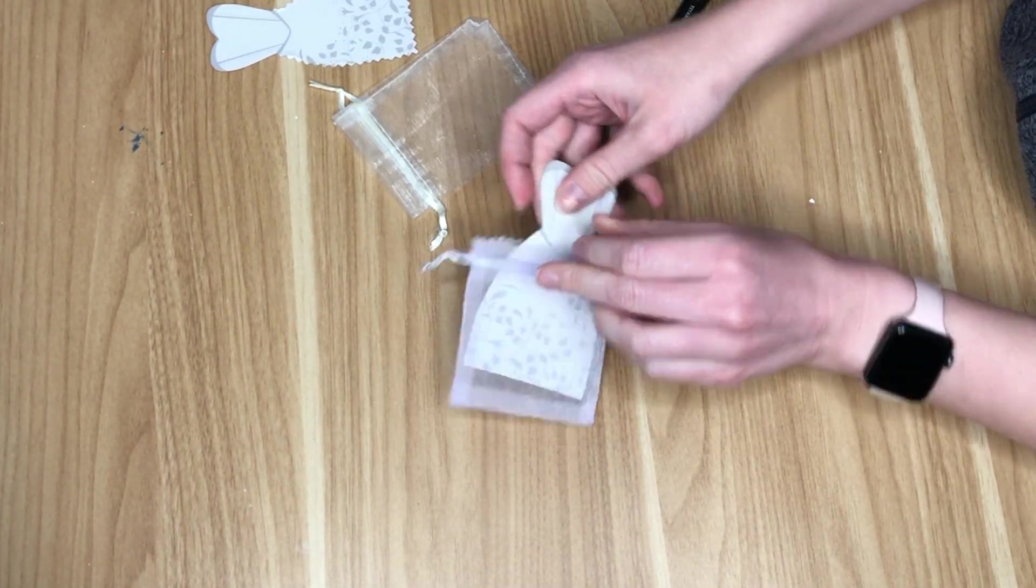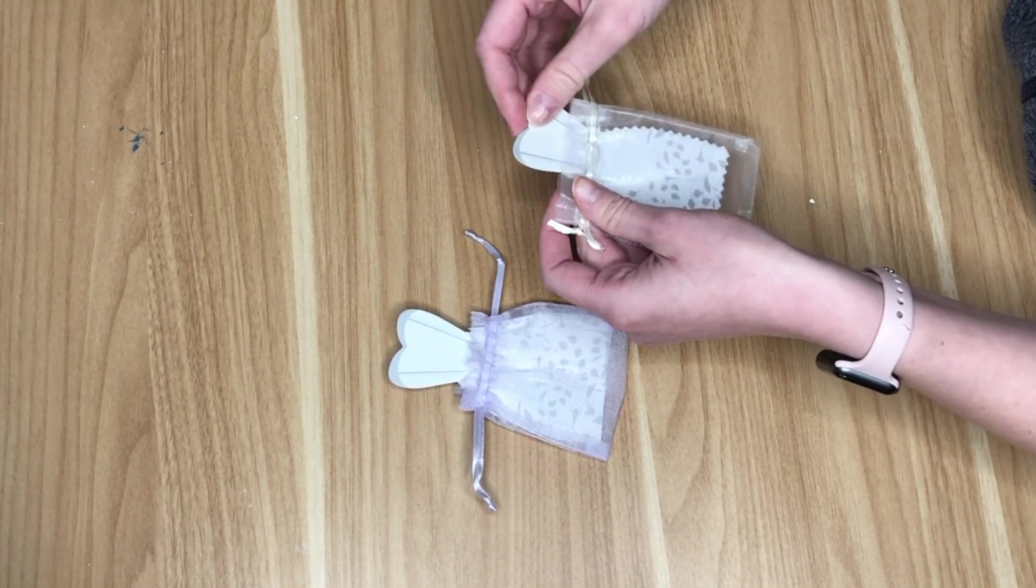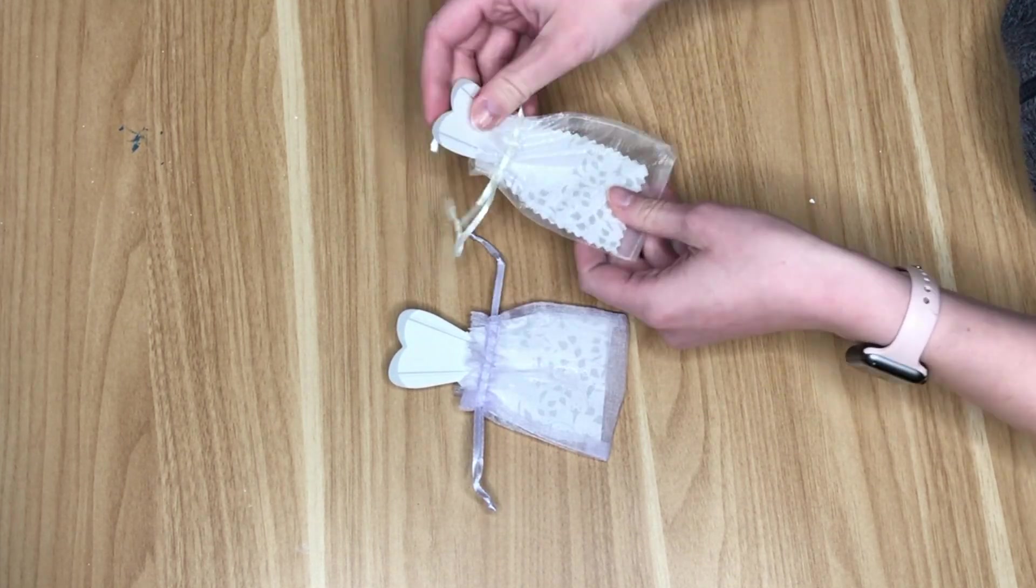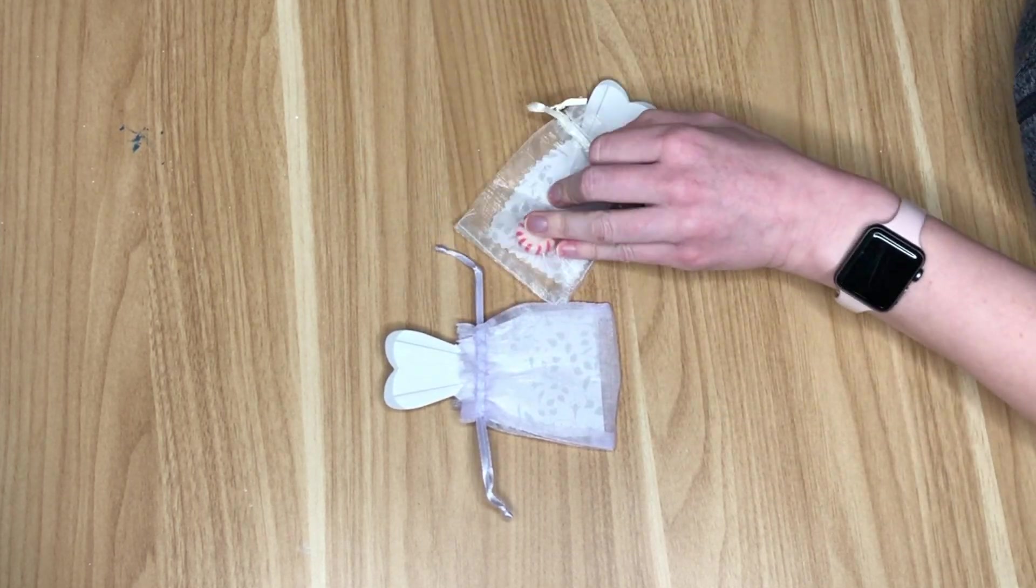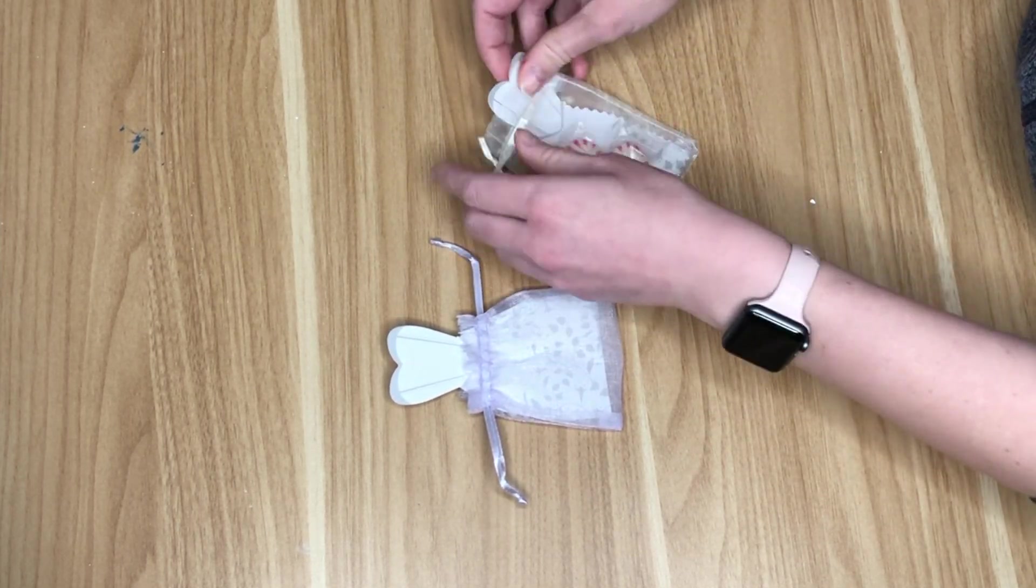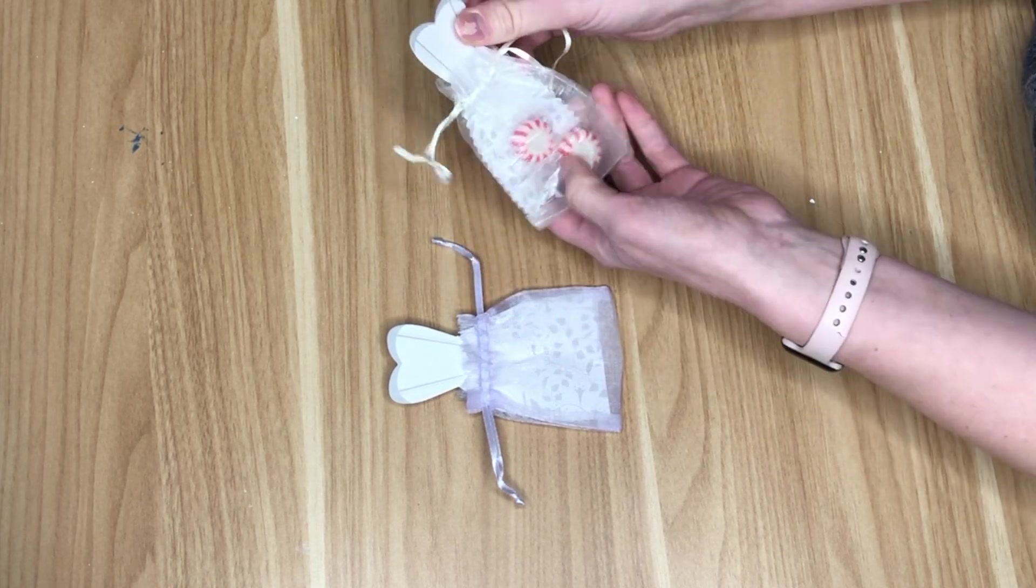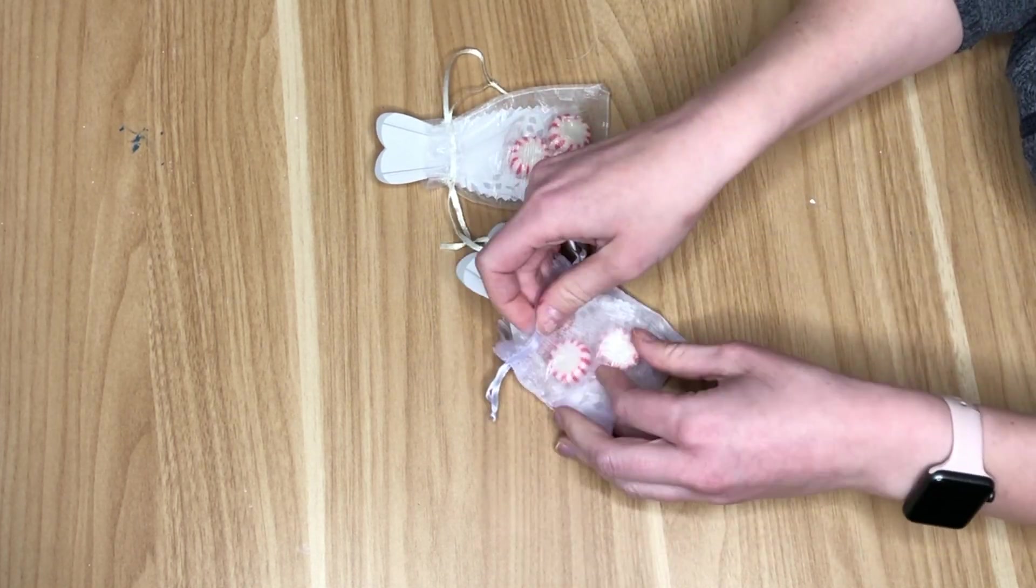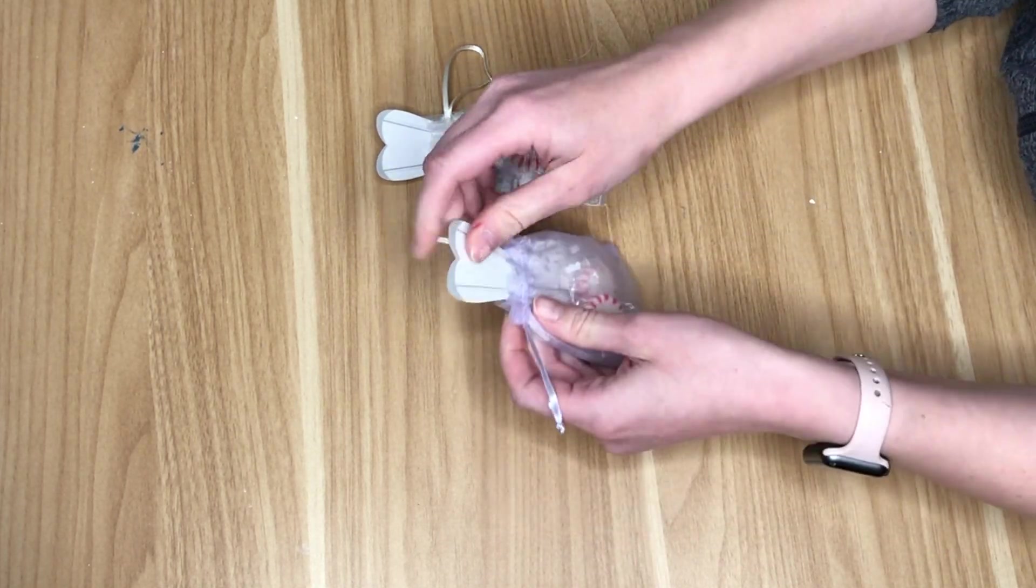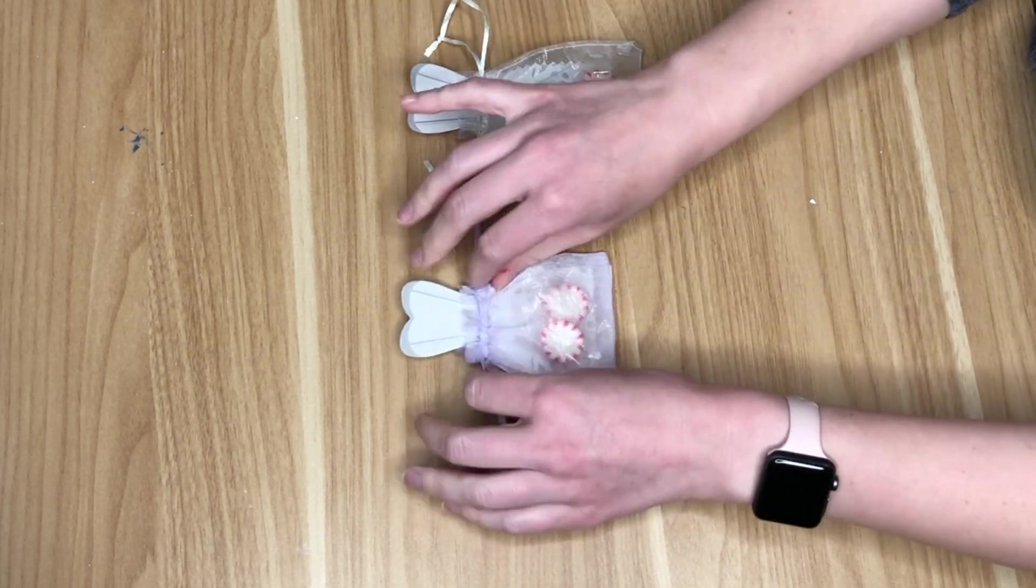And once I cut out the dress, I tucked it into this kind of lavender colored bag from the Dollar Tree. So I have my dress that I use the pinking shears on in the clear bag and I'm adding some mints to it. I ended up not doing this on my DIY, but it would be cute if you added a little tag that said meant to be. And then on our second one, I am also going to add mints to it.